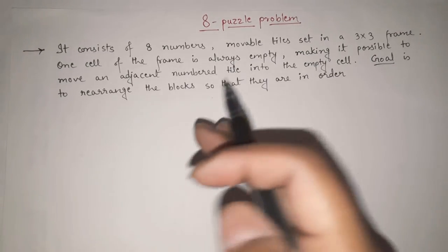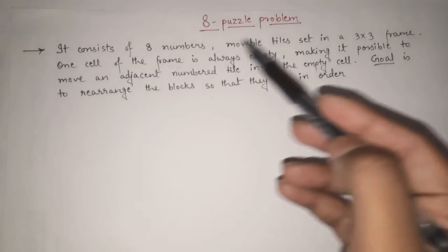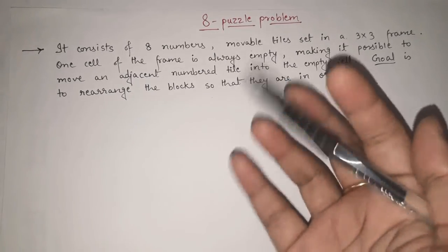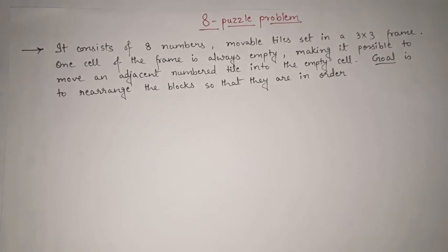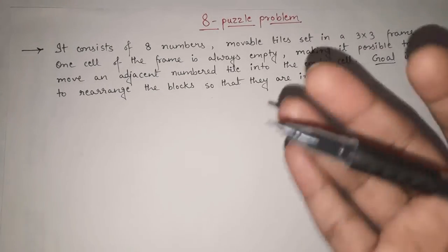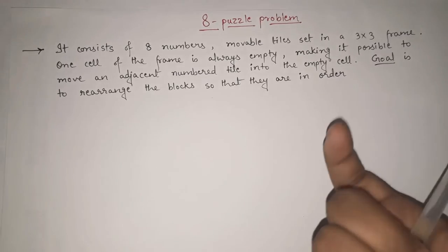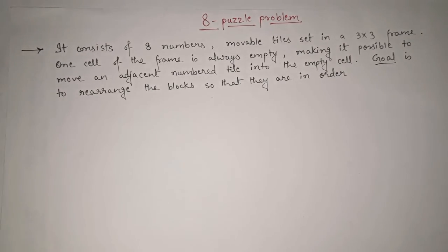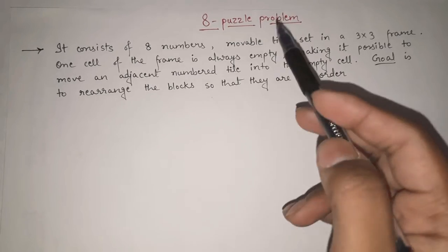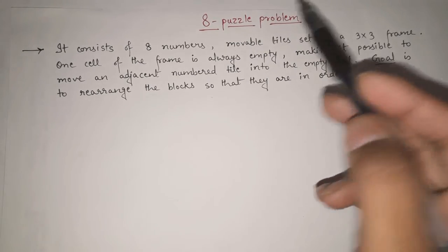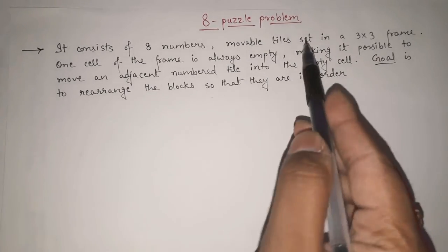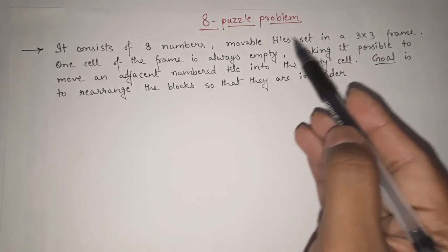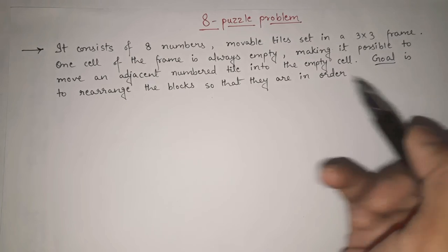In this video, we are going to see what this 8 puzzle problem actually is and how to solve the 8 puzzle. We are talking in terms of artificial intelligence, so we will see the whole procedure of how any system or agent is going to solve this particular problem. The 8 puzzle problem consists of 8 numbers and movable tiles set in a 3x3 frame.